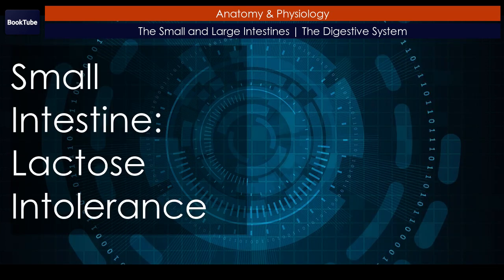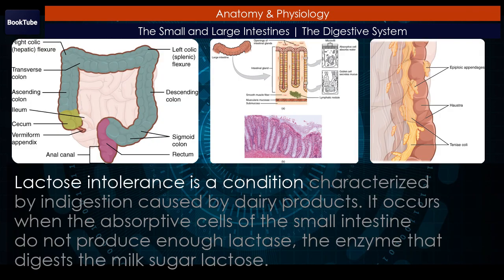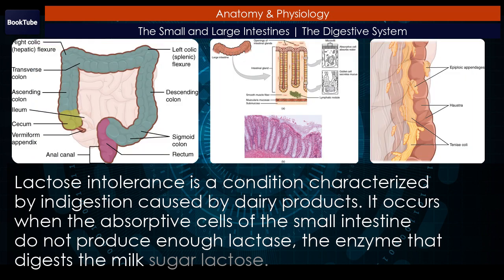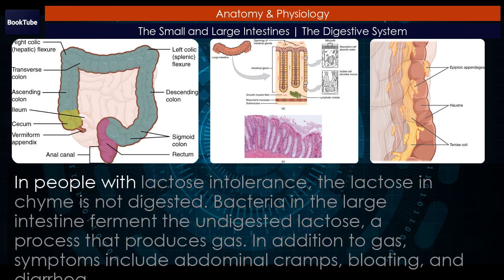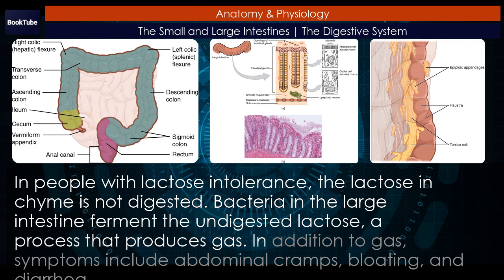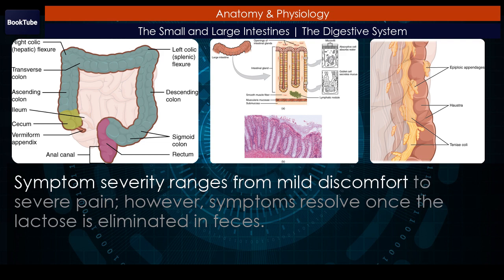Disorders of the small intestine: Lactose intolerance. Lactose intolerance is a condition characterized by indigestion caused by dairy products. It occurs when the absorptive cells of the small intestine do not produce enough lactase, the enzyme that digests the milk sugar lactose. In most mammals, lactose intolerance increases with age; in contrast, some human populations, most notably Caucasians, are able to maintain the ability to produce lactase as adults. In people with lactose intolerance, the lactose in chyme is not digested; bacteria in the large intestine ferment the undigested lactose, producing gas. Symptoms include abdominal cramps, bloating, and diarrhea, ranging from mild discomfort to severe pain. However, symptoms resolve once the lactose is eliminated in feces.